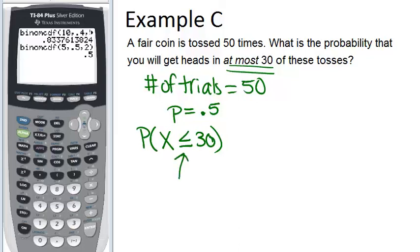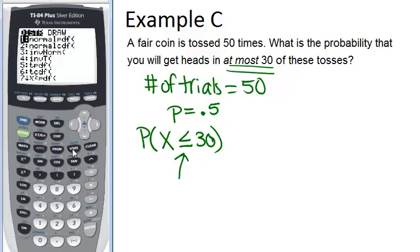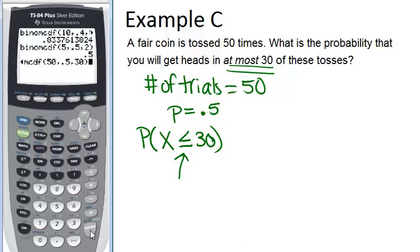So we can go into our menu again, second variables and find the binomial CDF button, type in our data or our information and paste it and click enter. And we get our answer is 0.94 which is about 94%. So there is a 94% chance that we will have at most 30 tosses that are heads.